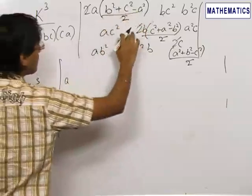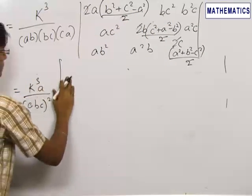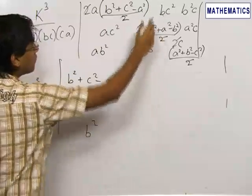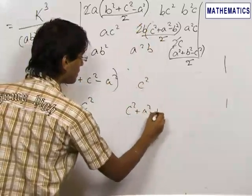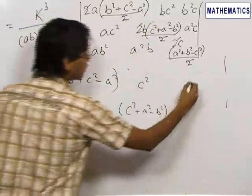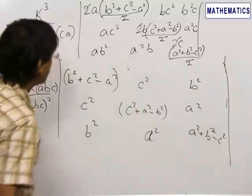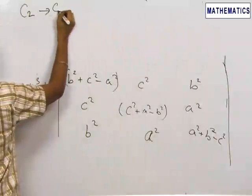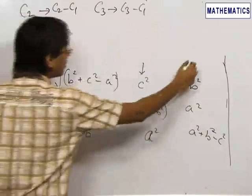Looking at the first column, we can take A common, leaving B² + C² − A², C², B². From the second column, take B common, leaving C², C² + A² − B², A². From the third column, this entry becomes A² + B² − C². We will not expand the determinant directly; instead, we apply column operations C2 → C2 − C1 and C3 → C3 − C1.